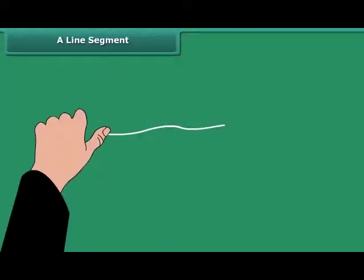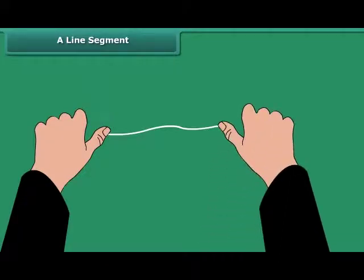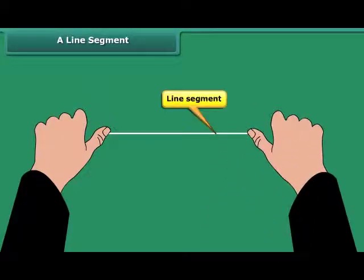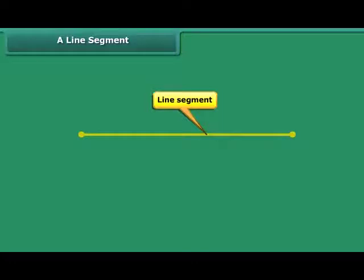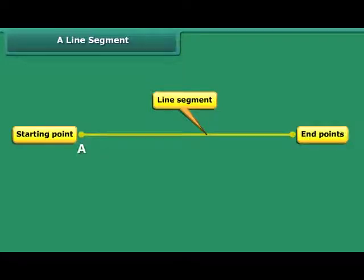Take a thin thread and hold it without slack. It represents a line segment. The shortest distance between two points is known as a line segment. Starting and ending of a line segment are its end points. A line segment can be named by naming its end points.